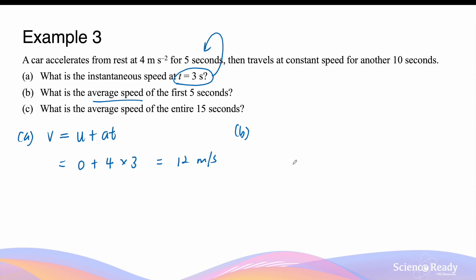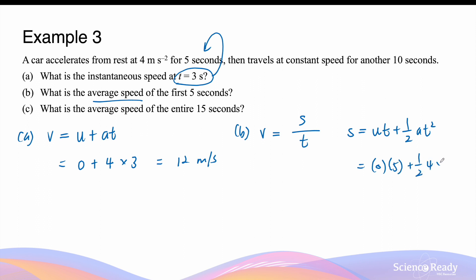For Part B, the average velocity in the first 5 seconds: average velocity is total displacement divided by total time. We need to calculate the displacement first using s = ut + ½at². u is zero, t is 5 seconds, a is 4 m/s², giving a displacement of 50 meters. Therefore the average velocity for the first 5 seconds is 50 meters divided by 5 seconds, which is 10 meters per second.